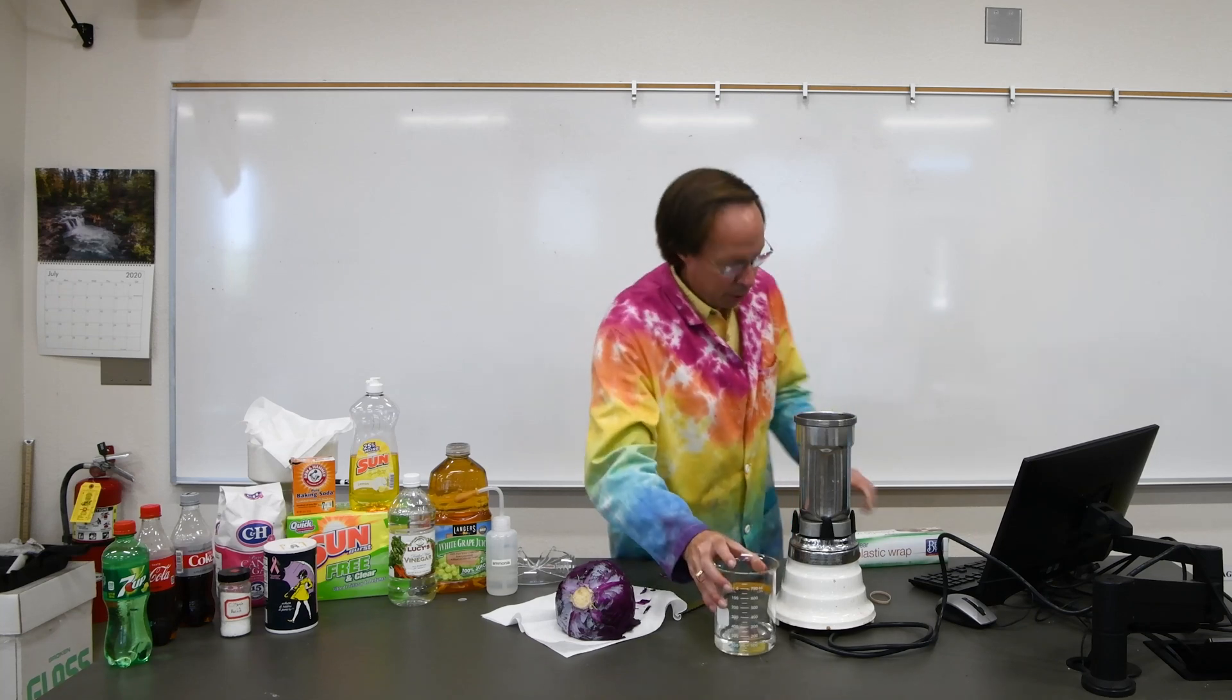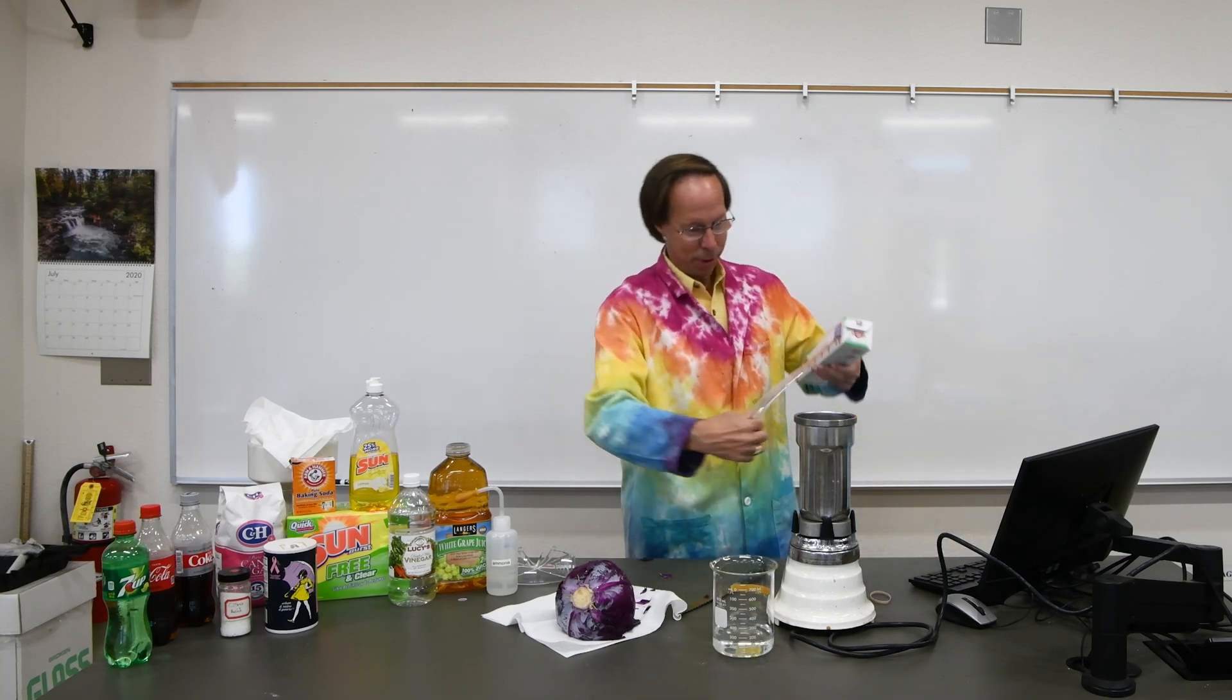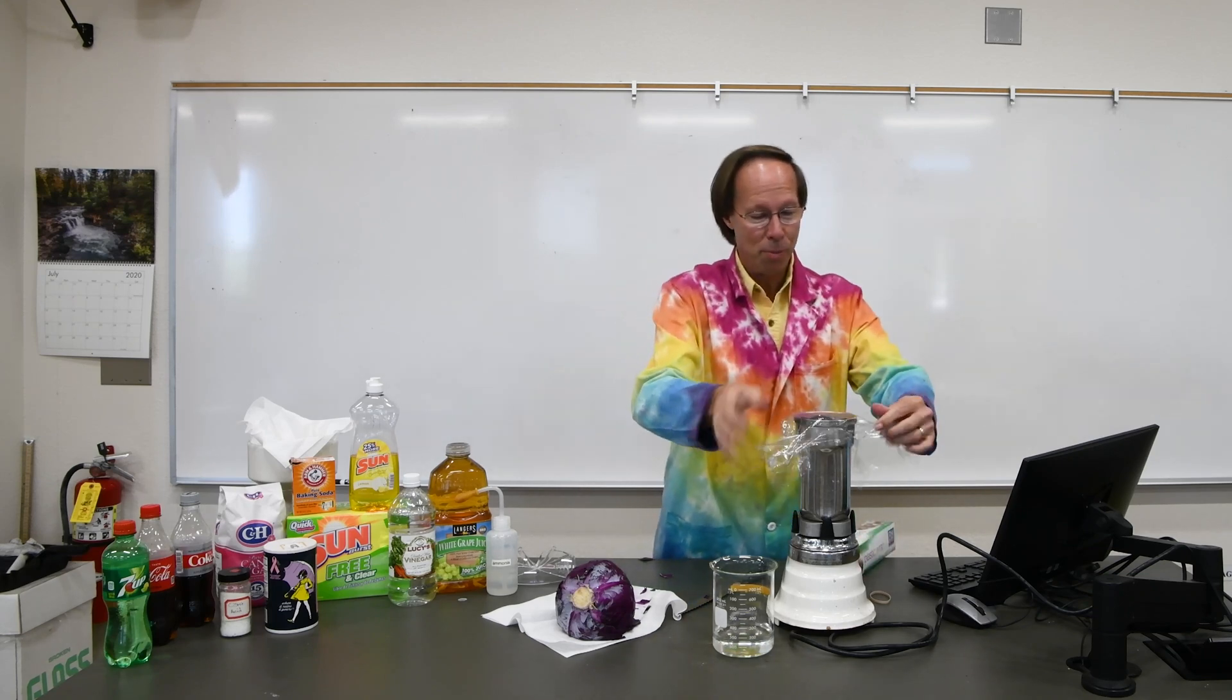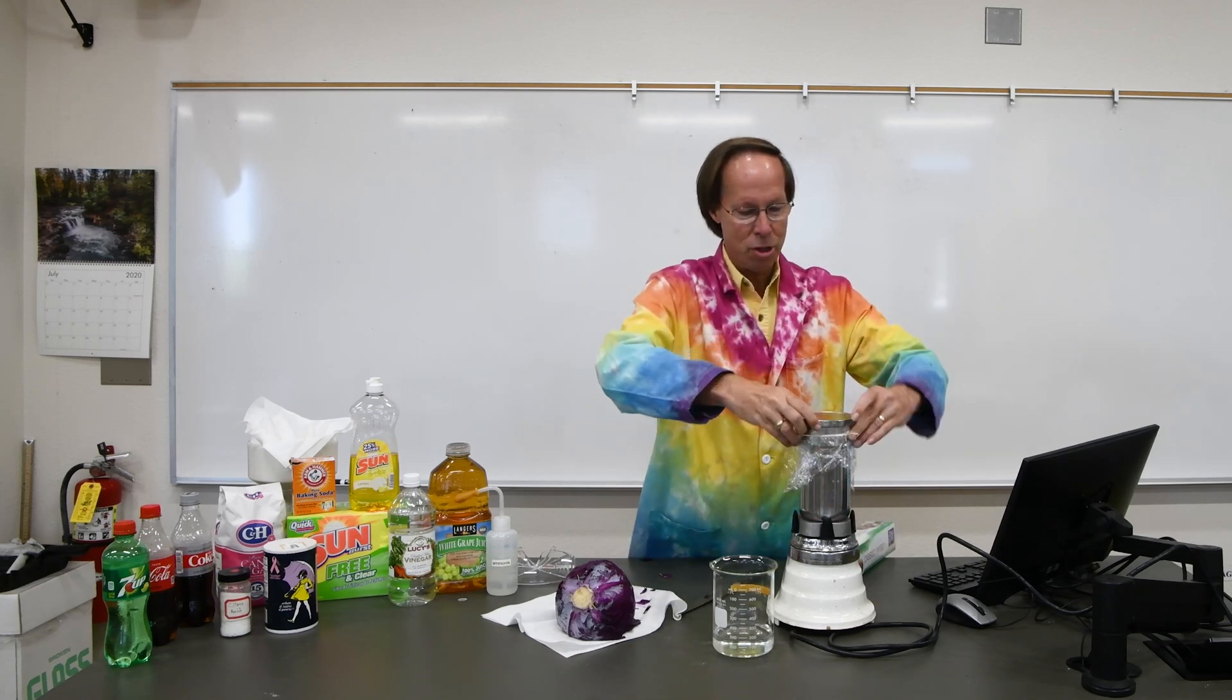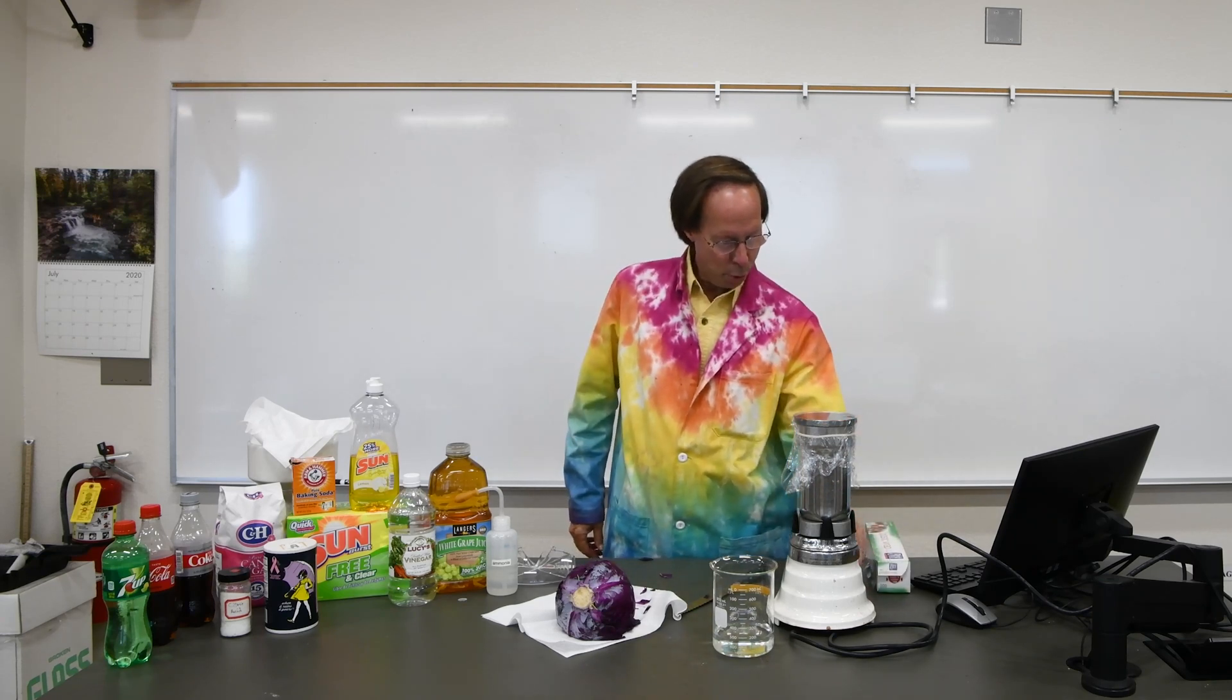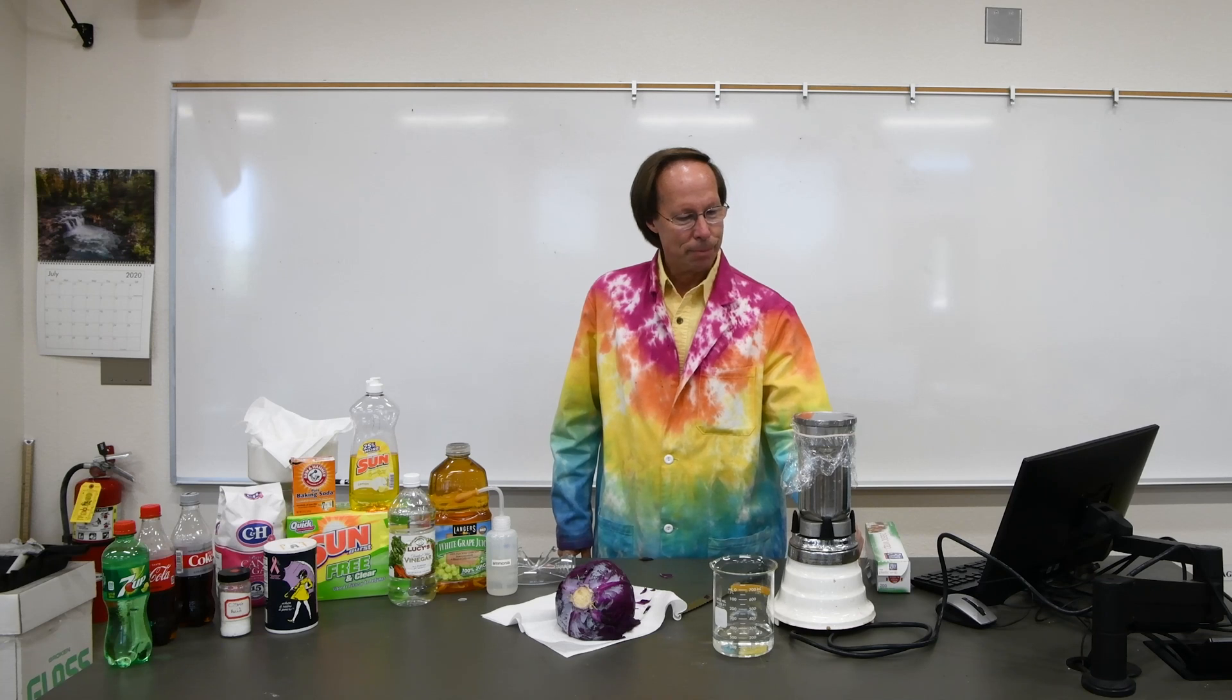And then we want to put a cover on top of the blender because otherwise it will spray purple cabbage juice all over the place. Unfortunately, our blender is missing the lid. Hopefully at home you guys still have a lid there. But we're going to sort of make a makeshift one here with a rubber band. Now this is going to be pretty loud. So I'm going to start it up and then we'll pause the video while we let this run for 30 seconds to a minute. So we'll start it out on low here. So we'll take a break for a moment, let the cabbage juice finish winding up, and then we'll come back and continue.